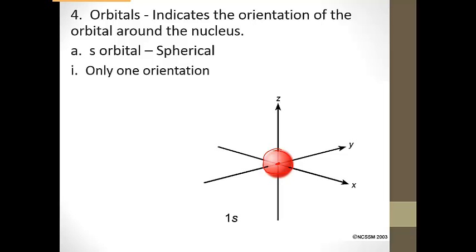And there's really only one orientation that we can have. The sphere sits on the x, the y, and the z axis kind of equally. So there's only one orientation that we can have for that. So notice here we just have one s since there's only one orientation.